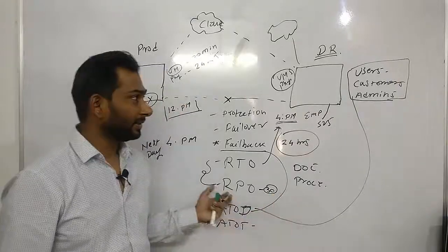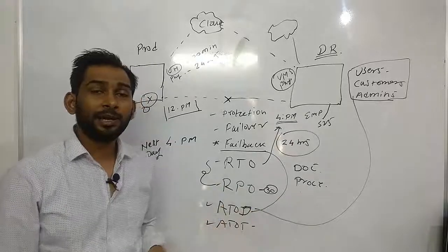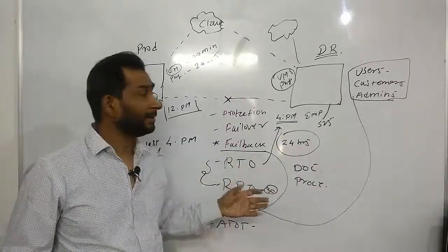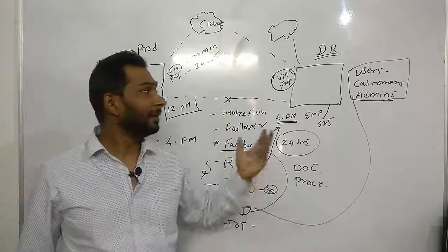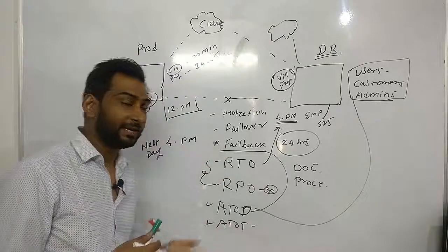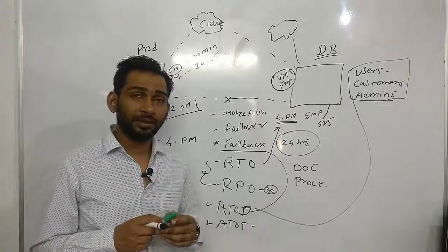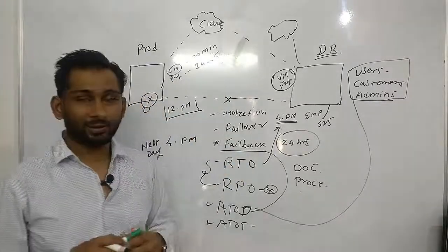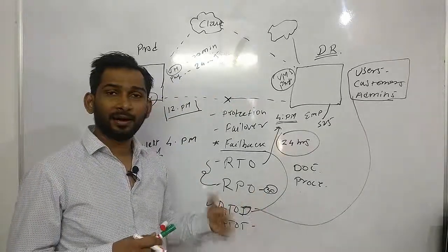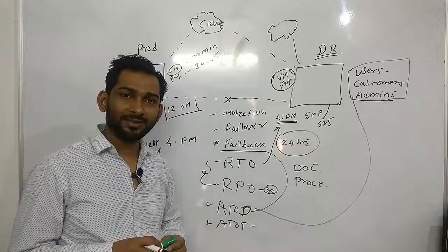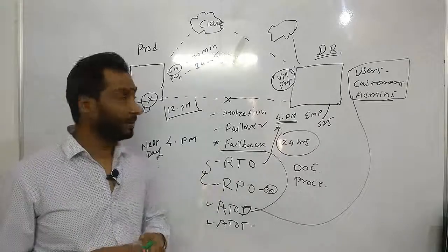User access and admin access are also critical. At the time of test you can have limited users access the isolated recovered DR servers. But at the time of disaster you need to make sure all users, customers, and admins have access to the DR site. For users, you can use site-to-site VPN from your work area recovery location. For customers, you can update public DNS. For admins, SSL VPN access allows them to log in and make changes to the DR environment.